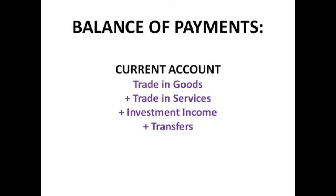And finally, transfers — which are official and private transfers of money. You do outflows minus inflows, so the stuff going out, like payments to the EU, that sort of thing — mainly government transfers going out. Then it's more private transfers coming in, so say we've sent someone to work in Russia and they're sending back all their money to their family back here — that's a private transfer into the UK.